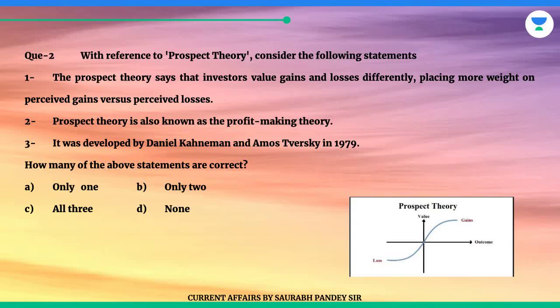Statement 2: Prospect theory is also known as the profit-making theory. Statement 3: It was developed by Daniel Kahneman and Amos Tversky in 1979.